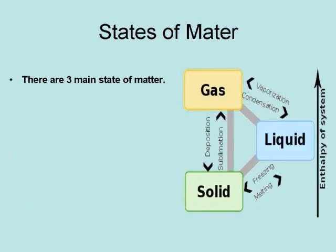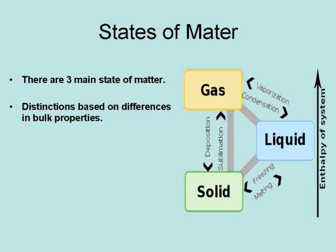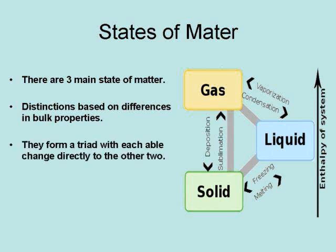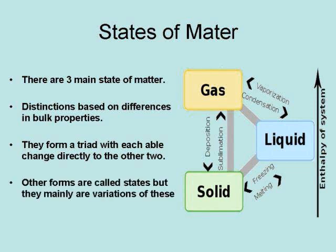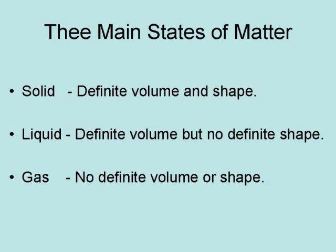There are three main states of matter. Their distinctions are based on differences in bulk properties. They form a triad, with each able to change directly into the other two. Other forms are called states, but they are mainly variations of these three. The three main states are: solids, which have a definite volume and definite shape; liquids, which have a definite volume but no definite shape; and gas, which has no definite volume and no definite shape.